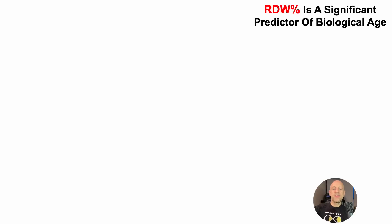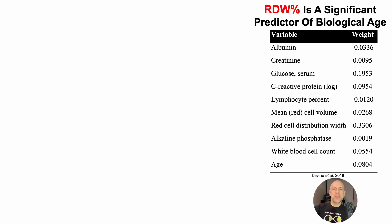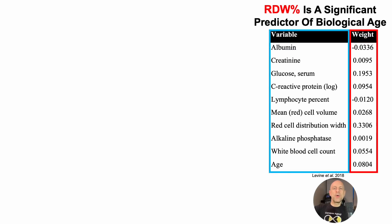The RDW percentage is a significant predictor of biological age. These are the nine biomarkers and chronological age — the predictors of biological age using Dr. Morgan Levine's biological age calculator, PhenoAge. On the left we've got those 10 variables, and on the right we've got how much they contribute to the prediction of biological age. Probably glucose would be the most significant predictor, but that's not true. The top predictor is the red blood cell distribution width, or RDW percentage.